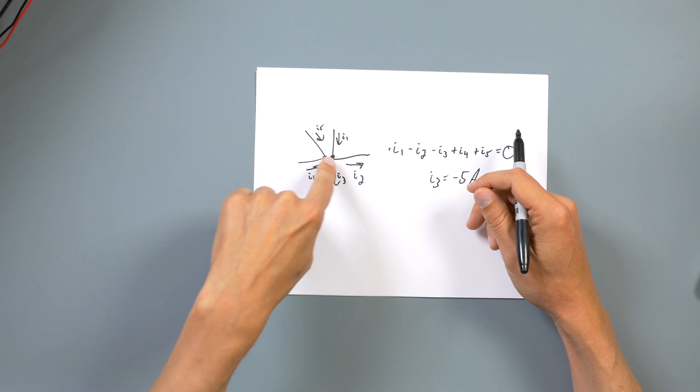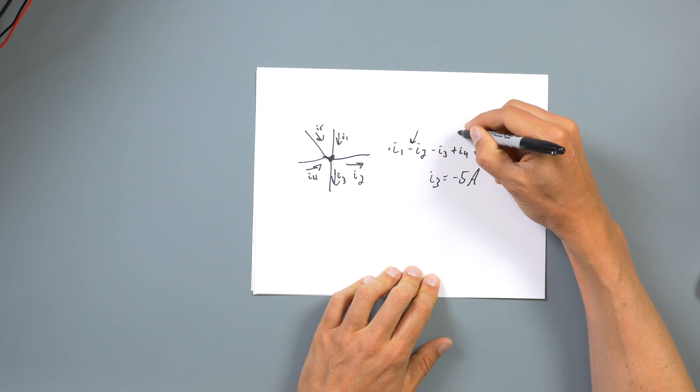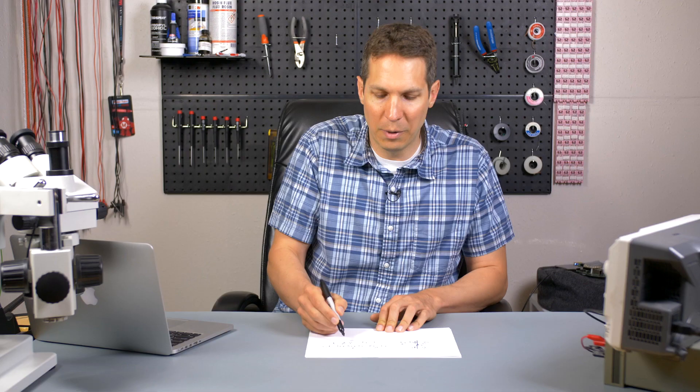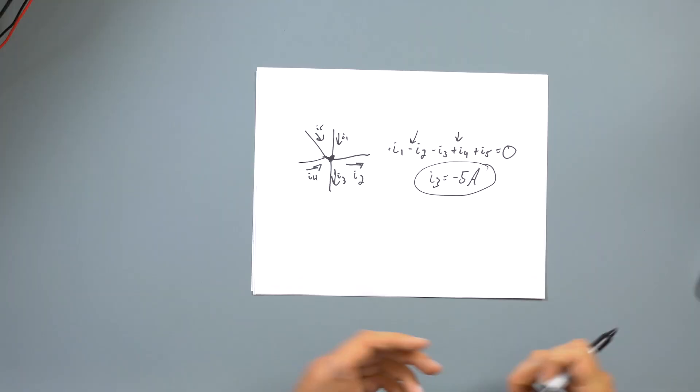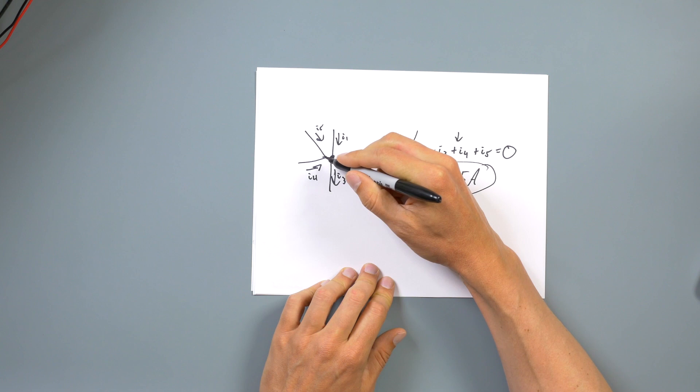We just have to make sure the signs of our math align. No matter what happens, it all comes out in the end by either giving us a negative number if we made the wrong assumption, or a positive number if we made the right assumption. And even then, it's not necessarily right or wrong — negative five amps going out is the same as positive five amps going in.